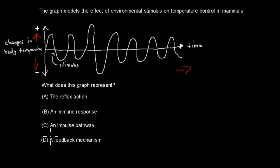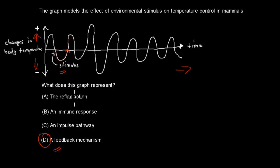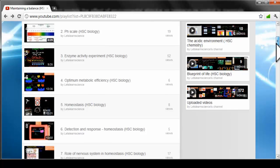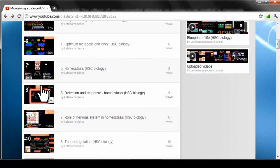The correct answer is D — the feedback mechanism. Here we have a stimulus that gets detected, then a response changes the temperature and brings it back to normal, and that keeps happening repeatedly. A reflex action has nothing to do with changing temperature. The immune system is not related, and an impulse pathway is also not related. So the correct answer is D, covered in video number six: Detection Response.